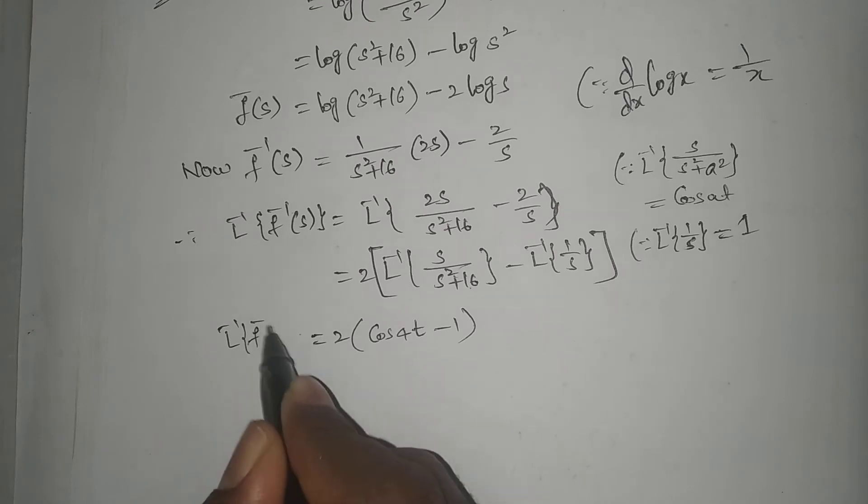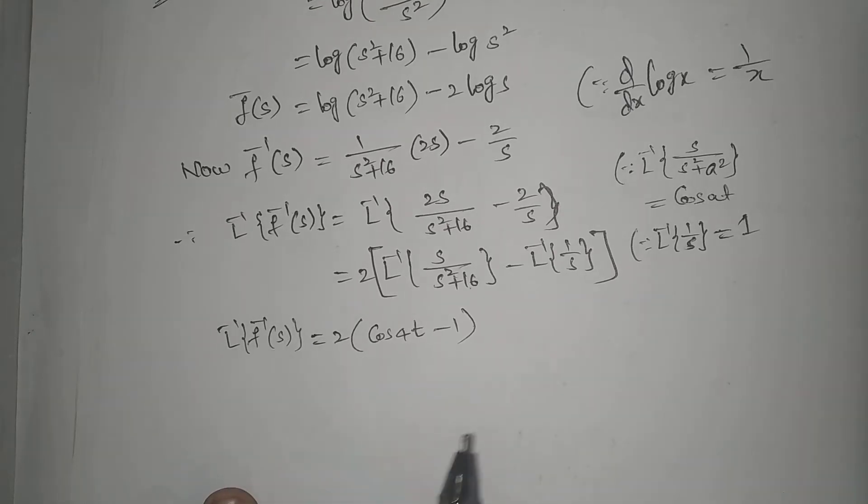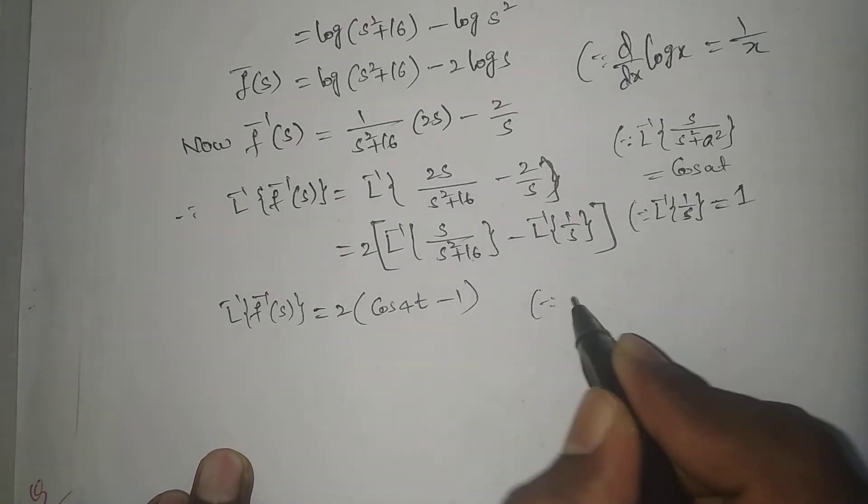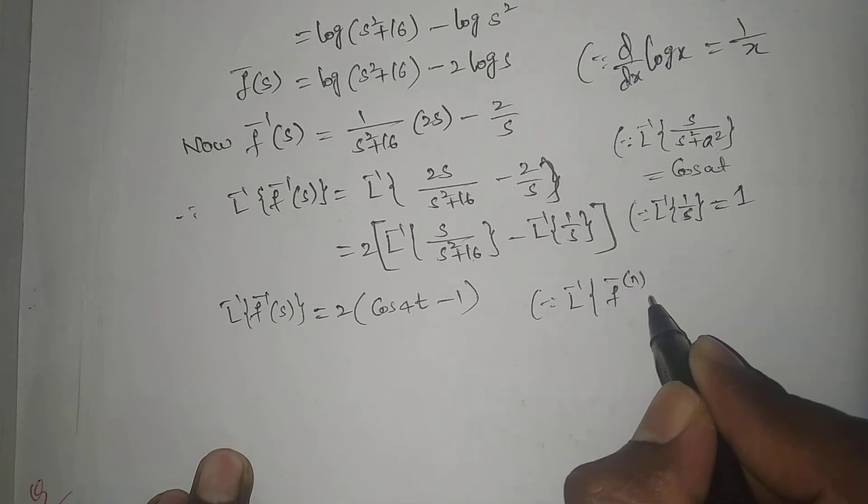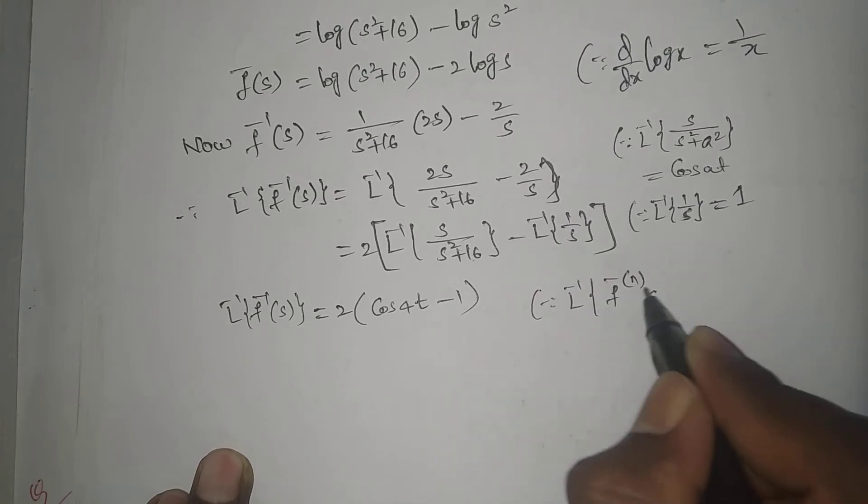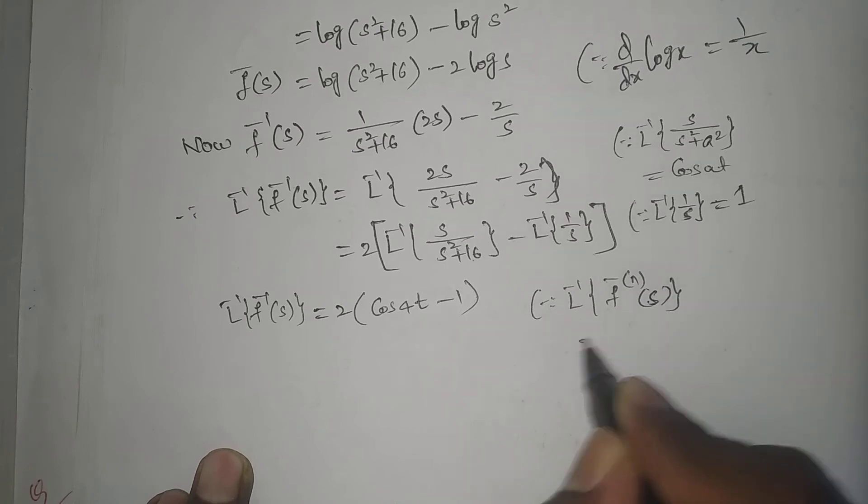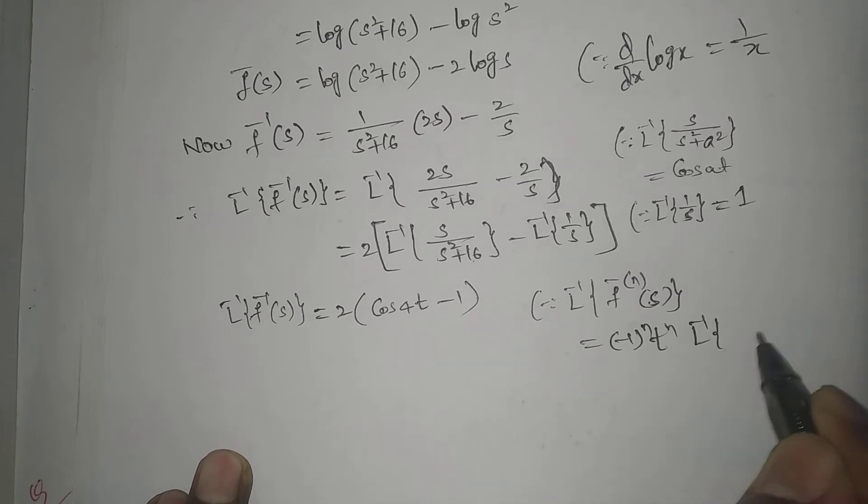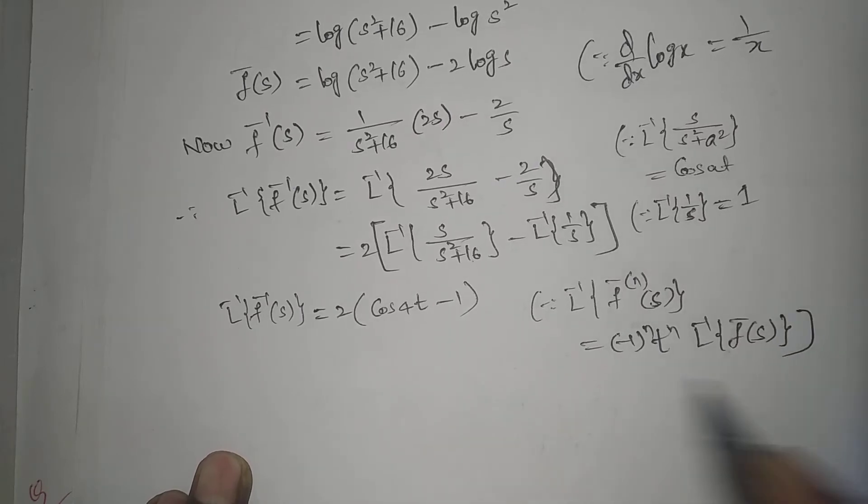Now we are applying the multiplication formula: inverse of t^n. L⁻¹{f̄'(s)} using this formula here.